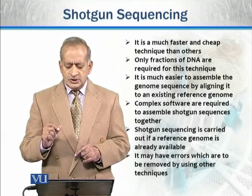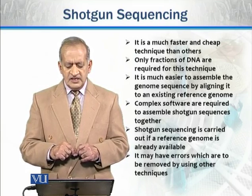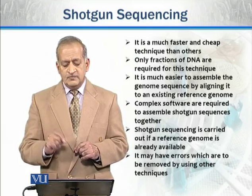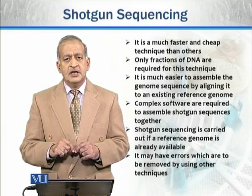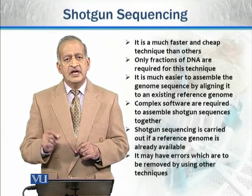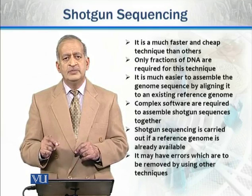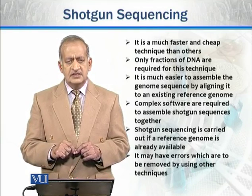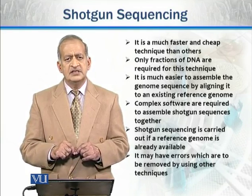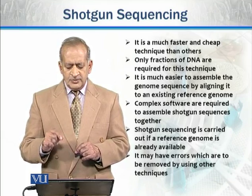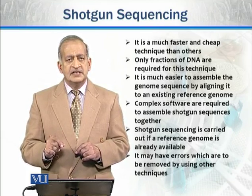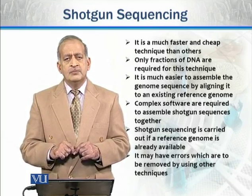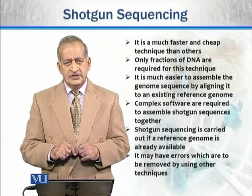However, the sequence assembly is best carried out if there is some reference genome available. If one is not available, it will be quite difficult, and this is a disadvantage. Additionally, it may have errors which need to be removed by using other techniques.